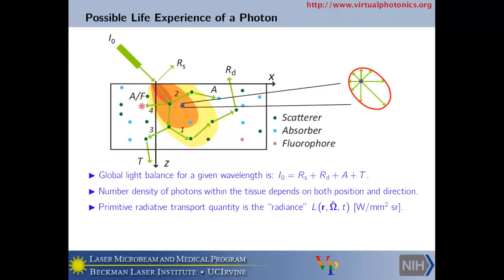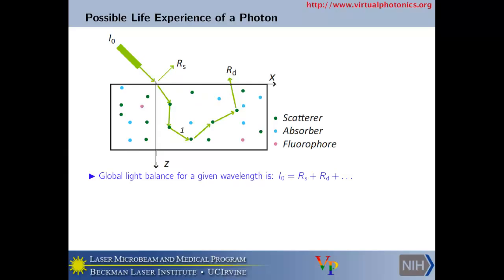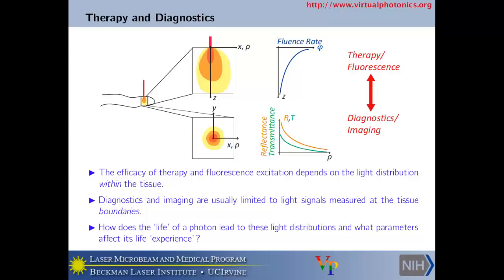Light is a complicated function of space and angle because it both absorbs and scatters. We first need to understand how light absorbs and scatters individually, then put them together to get the radiative transport equation. The reason why the radiance is so important is that all other metrics in radiative transport can be derived from it — both the fluence rate and reflectance and transmittance. Once you have the radiance, you can derive all of these other things.